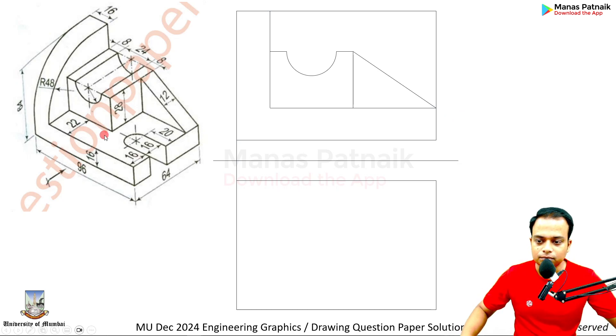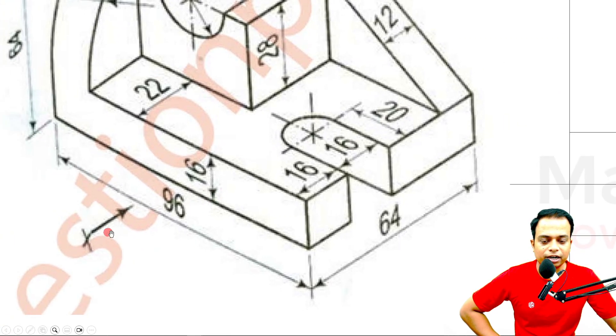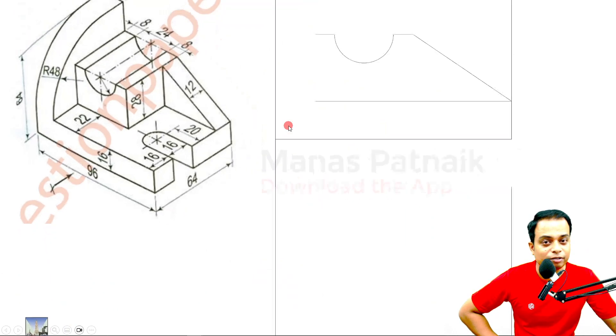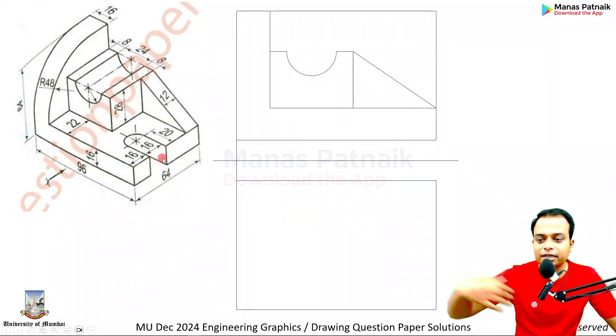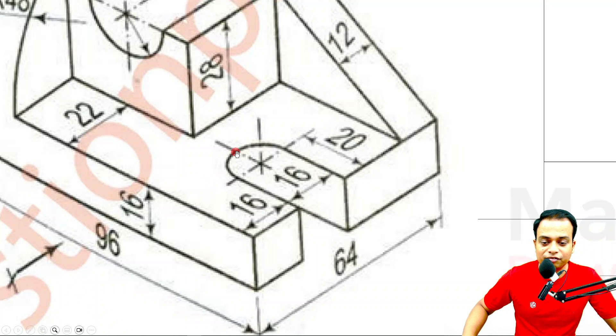If you watch, there is this circular portion over here. So we are viewing it from the front. It starts here. If it starts over here, some information has to be given in the form of a hidden feature. So there's got to be a dashed line.